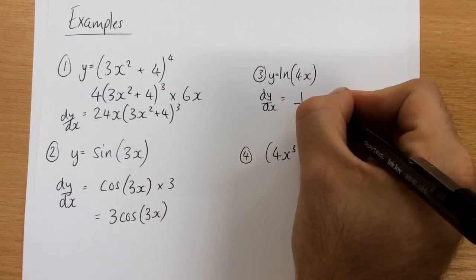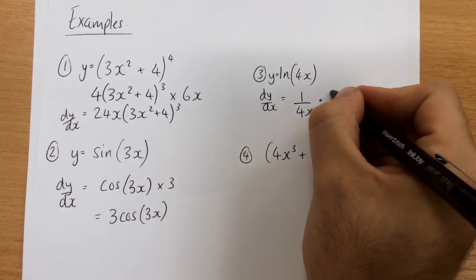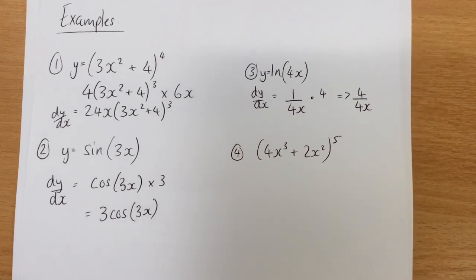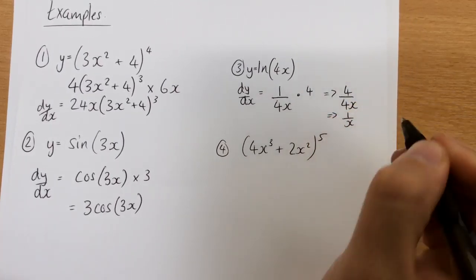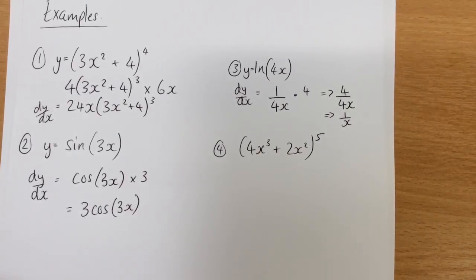And then, what am I going to have to times this by? Times it by 4, so then my final answer would be 4 over 4x, and I can cancel that down to just get 1 over x, because 4 divided by 4 is 1.